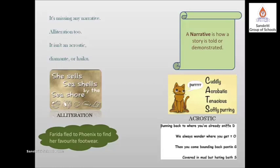An acrostic is a poem in which the first, last, or any letter in each line spells out a word, message, or phrase. For example, an acrostic for 'CATS': C — cuddly, A — acrobatic, T — tenacious, S — softly purring.